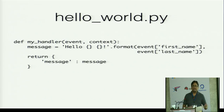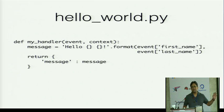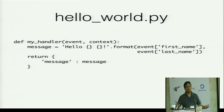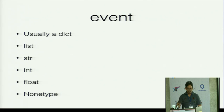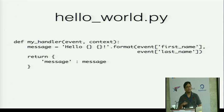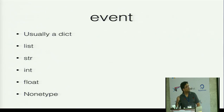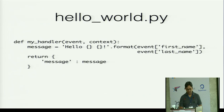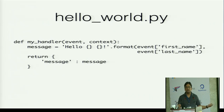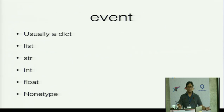A basic Lambda function shows a Python handler which takes an event and a context. I create a message string and return a dictionary. The event is usually a dict — for example, event['first_name'] and event['last_name'] — so the event is a dictionary with first name and last name as keys. It can also be a list, string, or float — the basic Python data types. But mostly I have seen events as dictionaries.